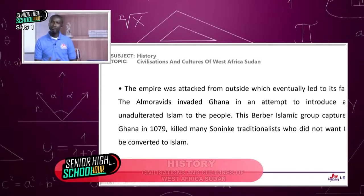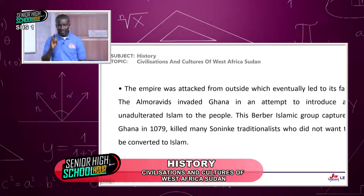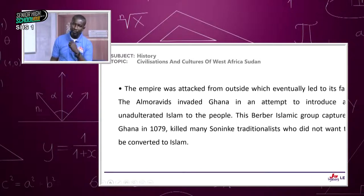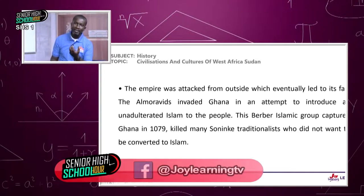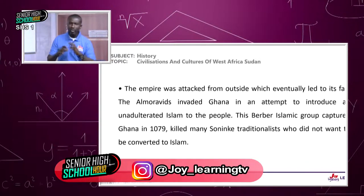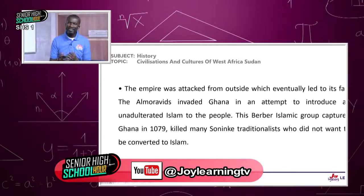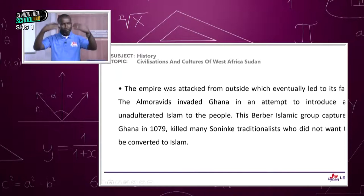This Berber Islamic group captured Ghana in 1075 and killed many Soninke traditionalists who did not want to be converted to Islam. The core group who founded Ghana empire were the Soninke people. Gradually, Islam was dripping in — they had accepted some Islamic scholars to work in their ministries — but the traditionalists could not see eye to eye with the new faith, which opened up old Ghana and caused it to fall. Internally there was civil war, and that gave room for people beyond their borders to attack.